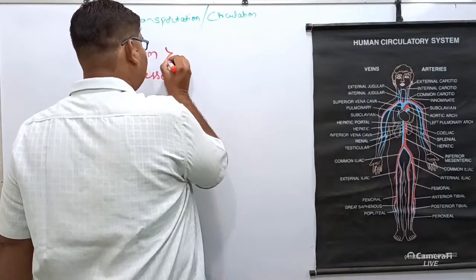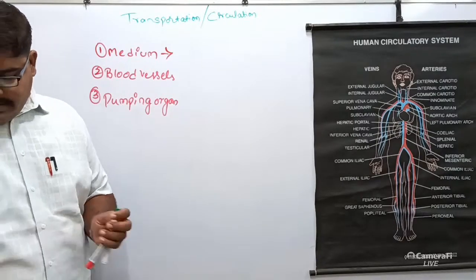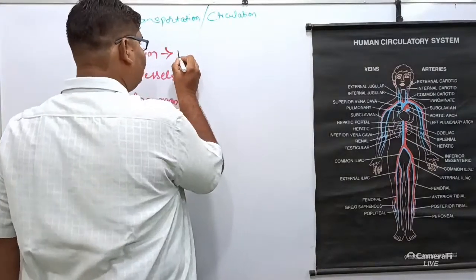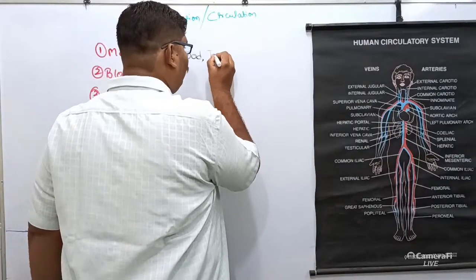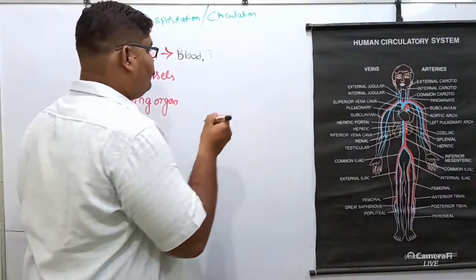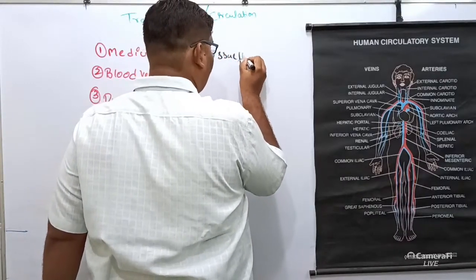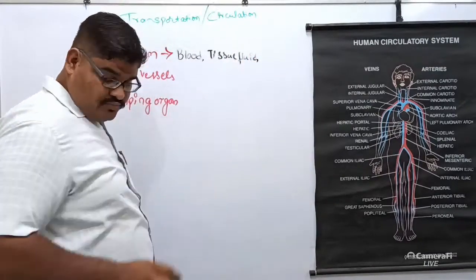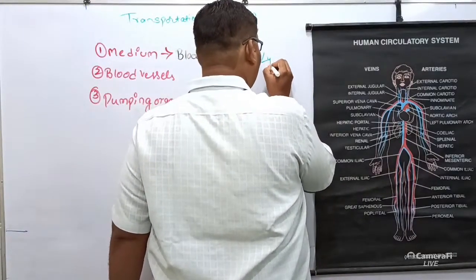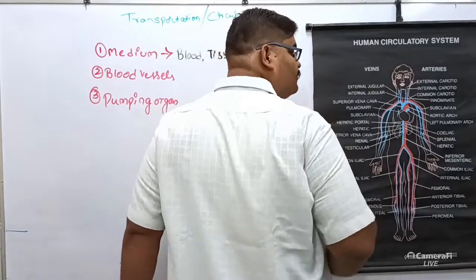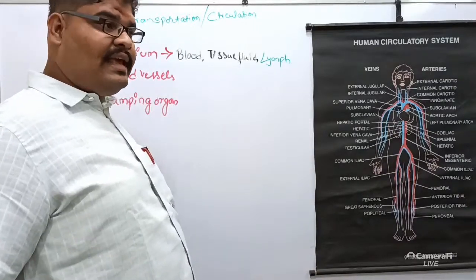The first component is the medium. We have various mediums for circulation: blood, tissue fluid, and lymph. These three are the important mediums through which the circulation process is carried out.